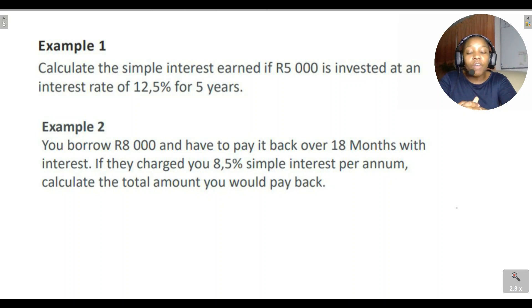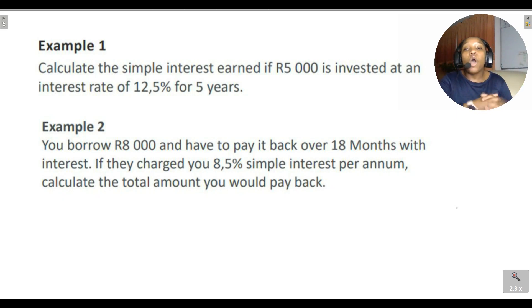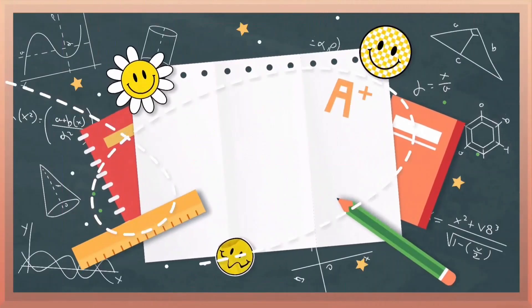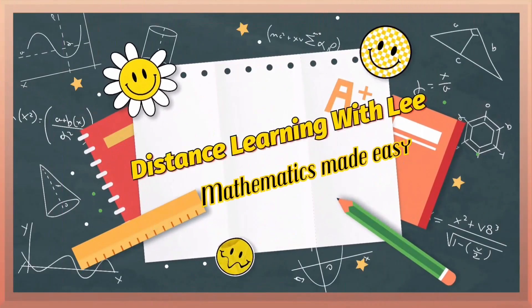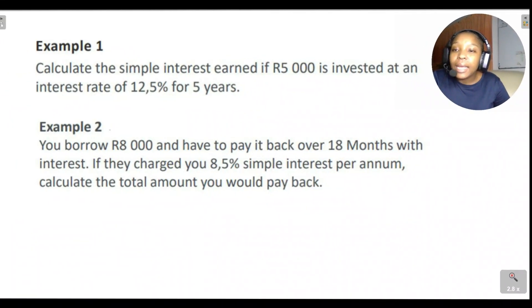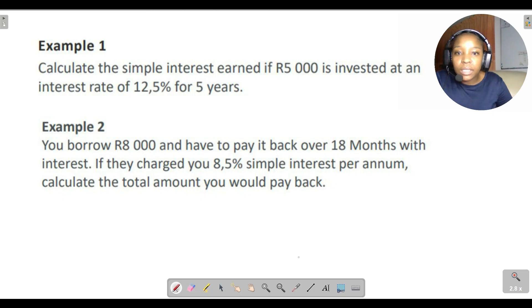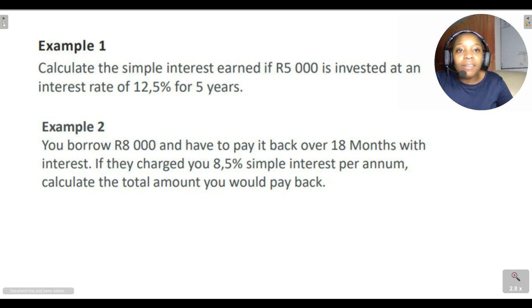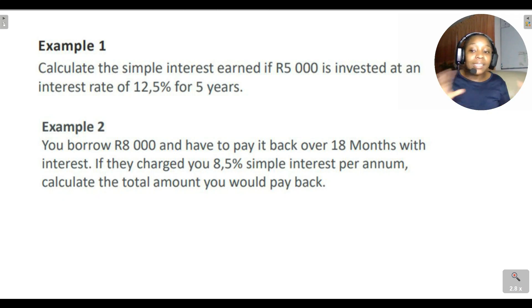In the next video tutorial, we'll be looking at compound interest calculations — compounded yearly, half-yearly, and quarterly. But for now, let's look at Example 1: calculate the simple interest earned if R5000 is invested at an interest rate of 12.5% for five years.